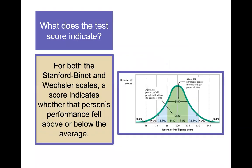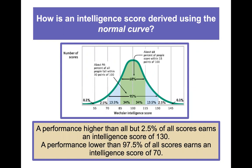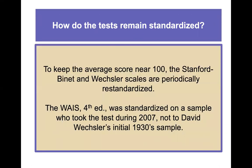For both the Stanford-Binet and Wechsler scales, a score indicates whether a person's performance fell above or below average and how they compare to others. A performance higher than 97.5 percent of all scores earns a score of 130; lower than 97.5 percent earns a score of 70. To keep the average near 100, these scales are periodically re-standardized — for example, the WISC was re-standardized into the WISC-5 just a few years ago.